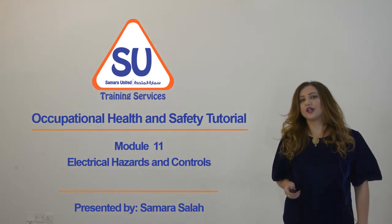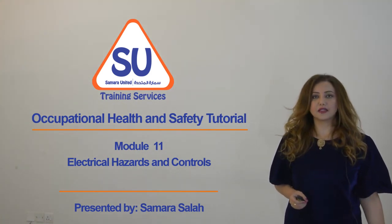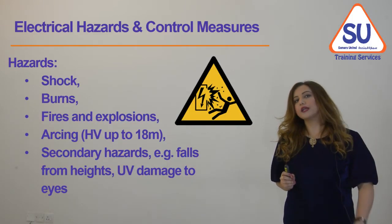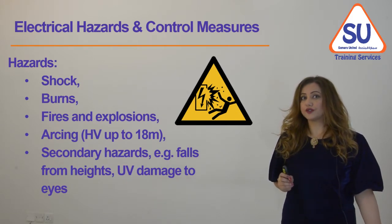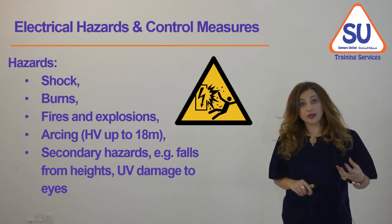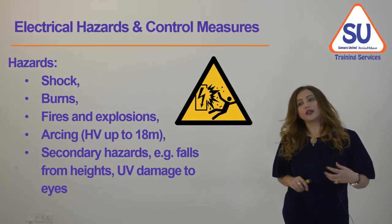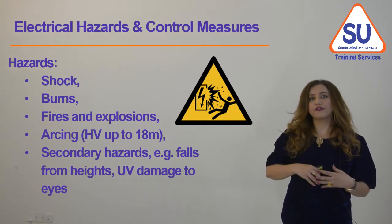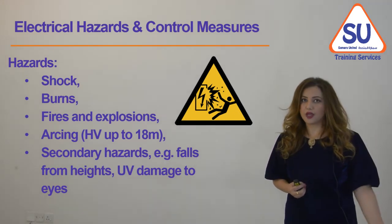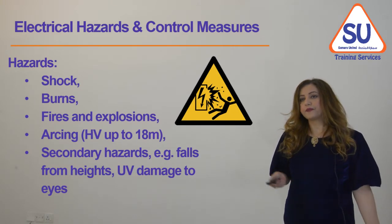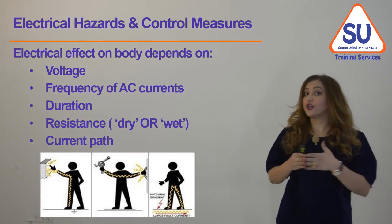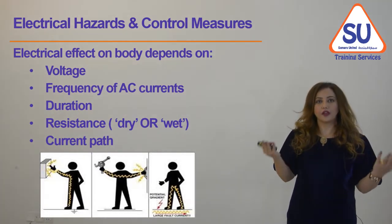Welcome to this session in which we will discuss electrical hazards and controls at the workplace. We would like to quickly go through the main hazards associated with electricity at work, starting with electrical shock, burns, fires and explosions, arcing, and secondary hazards such as falling from height due to electrical shock and damage to eyes from UV. Electrical hazards could affect humans and also affect property.